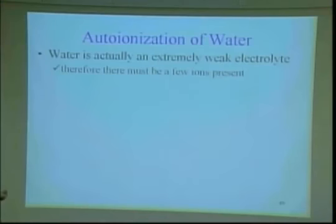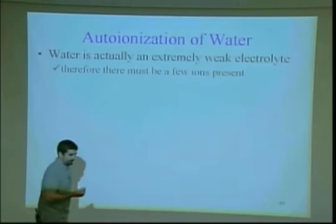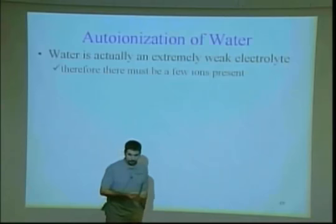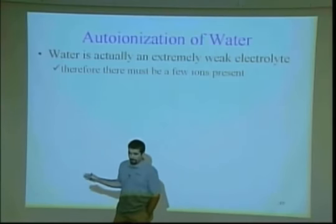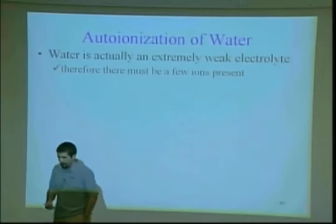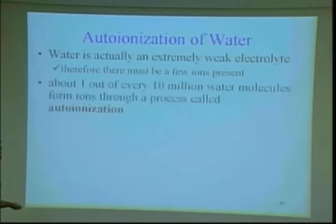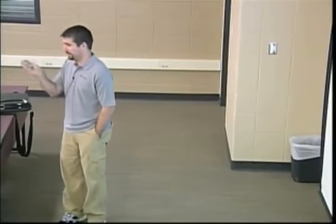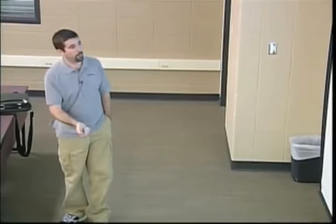Pure water can be an extremely weak electrolyte, but it is a very bad electrolyte. The only reason it has any electrolytic properties at all is because some of those water molecules actually ionize at any given time. About one out of every 10 million water molecules go through this process known as auto-ionization at any given instant. It is reversible — when they form, they can easily just reform back into what they were.